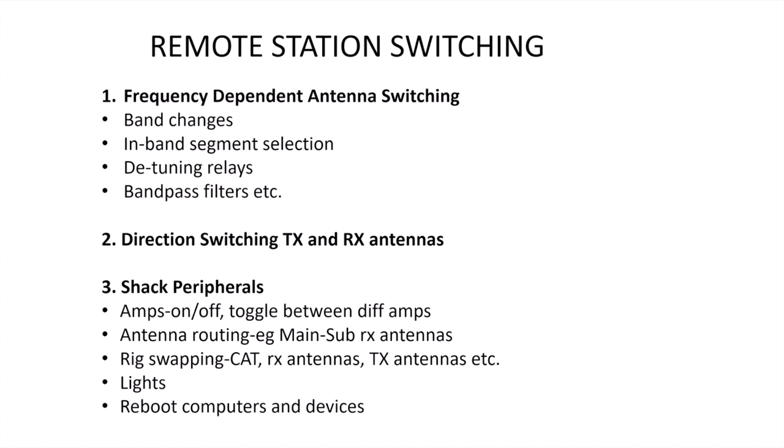I consider there to be three main categories for switching of any kind at a remote station. The first I call frequency dependent antenna switching — essentially any kind of switching related to the frequency of the transceiver. Obviously band changes and also in-band segment selection, which I'll talk more about at my location with the types of antennas I have. It could also involve detuning relays — for example, I need to detune some antennas in my tower when I'm on 160 meters — and it might also include switching in bandpass filters. Anything related to the frequency of the radio.